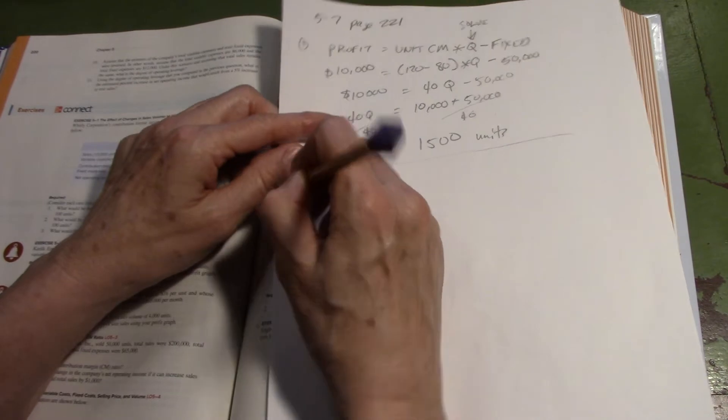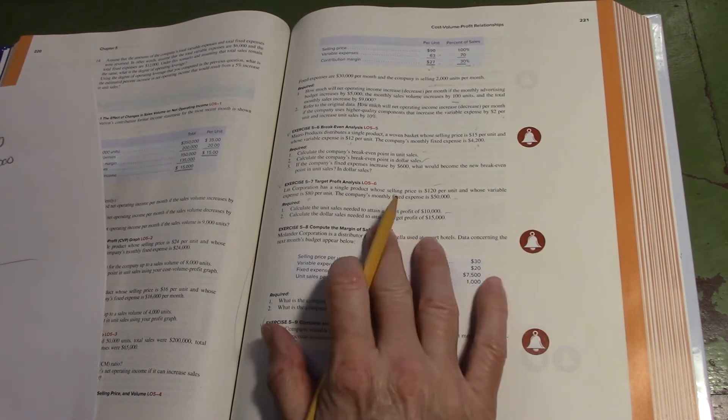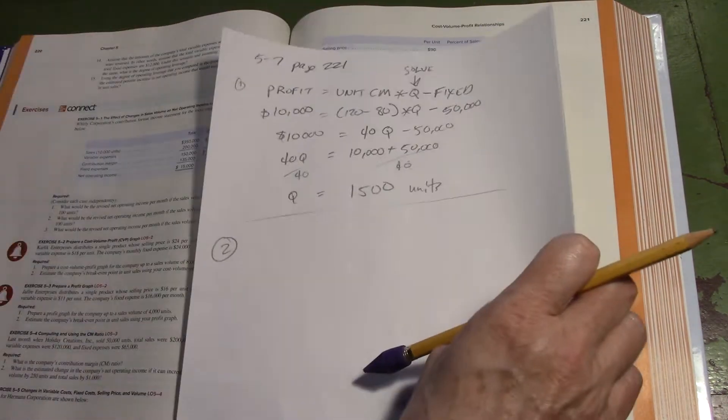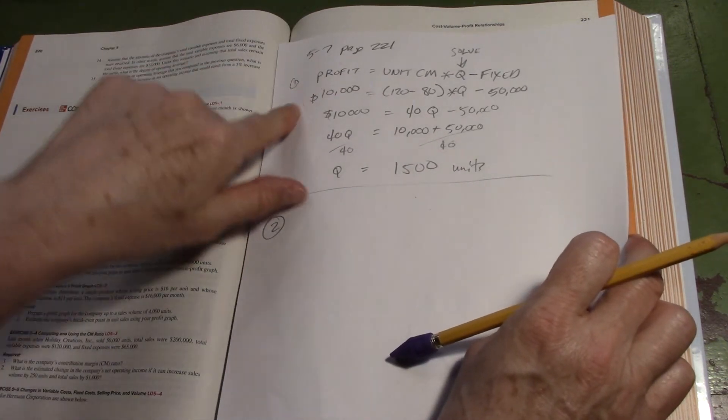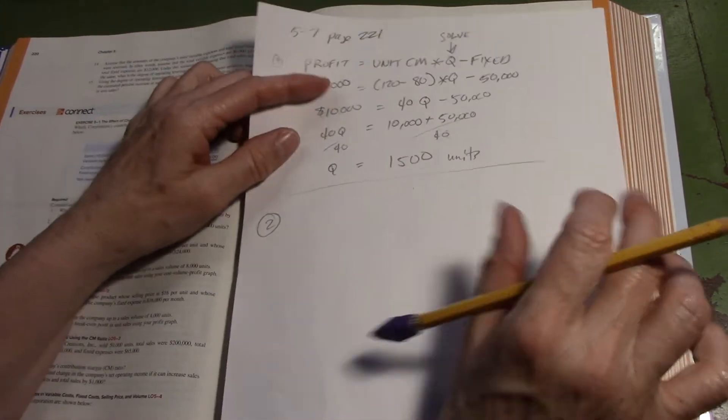What's part two? Calculate dollar sales for a target of 15,000. So instead of 10,000, it's 15,000.